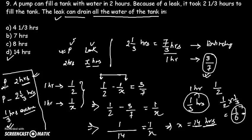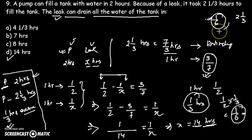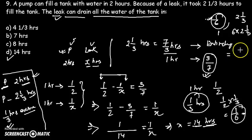Now where will this water go? If there were no leakage, it would overflow. But the real scenario is there is a leakage and no overflow. That means this entire 1/6 volume of water is being leaked out by the leakage. In how many hours? In 2⅓ hours, 1/6 of the tank is being leaked out.